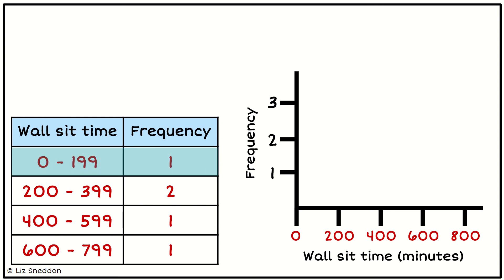Let's look at the first wall sit time. Between 0 and 199 has a frequency of 1. So from 0 up to 200, but not including it, I'm going to do a frequency of 1.